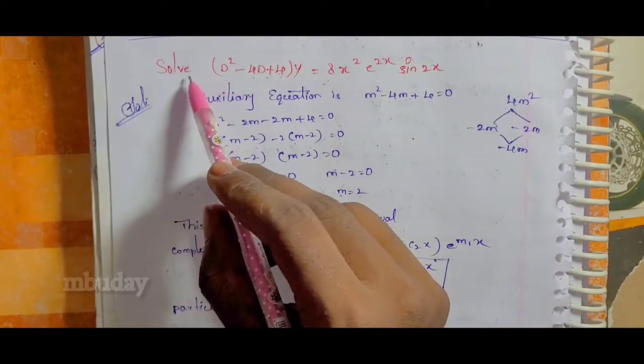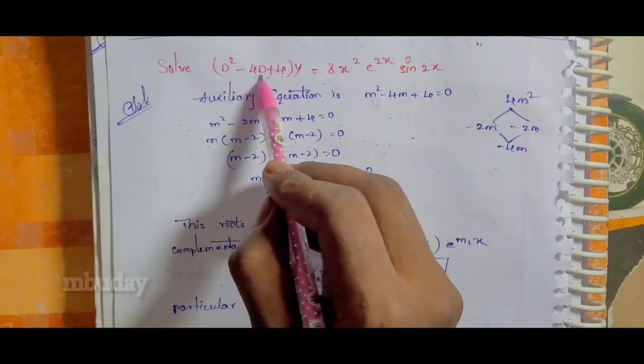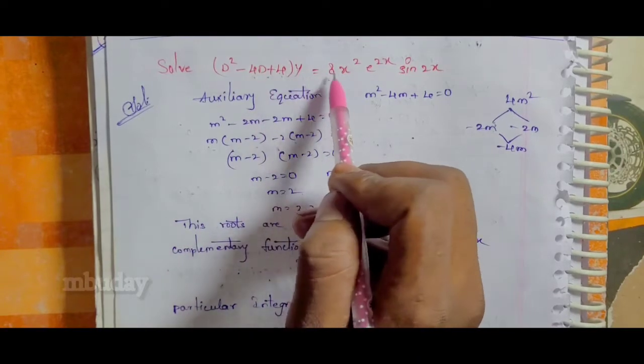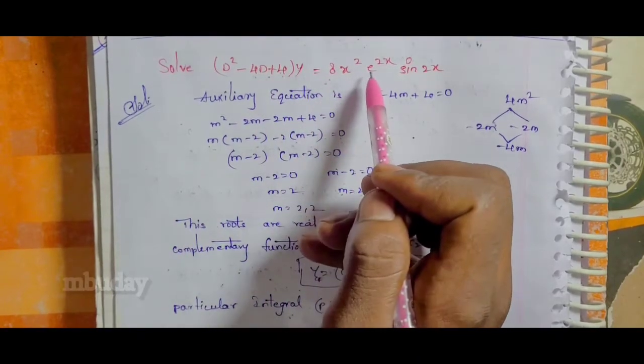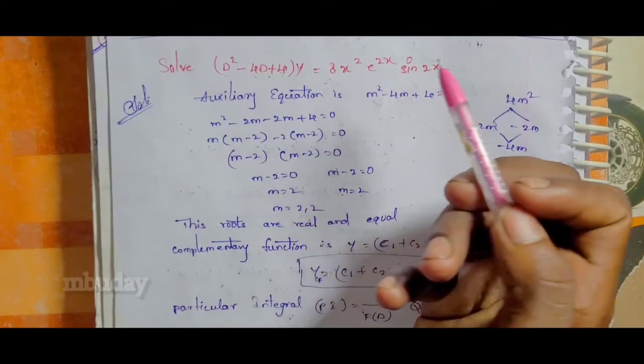The question is: (D² - 4D + 4)y = 8x² · e^(2x) · sin(2x).